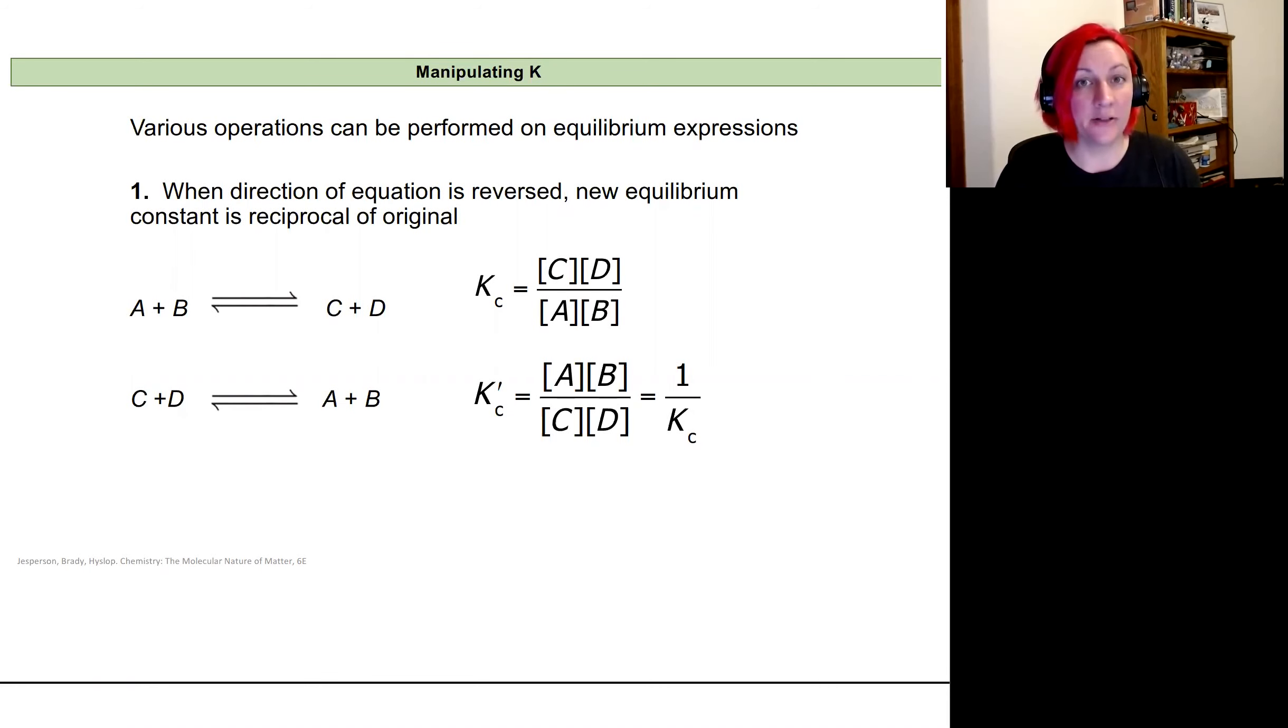Now that we've talked about how to calculate our equilibrium constants, I'd like to talk about some of the algebraic ways we can manipulate them given what we're doing with the chemical reactions. There are three ways I'm going to show you of how we can manipulate K, so we can take information from one reaction and learn about another. While I don't anticipate we'll use these a ton, it's important to walk through.